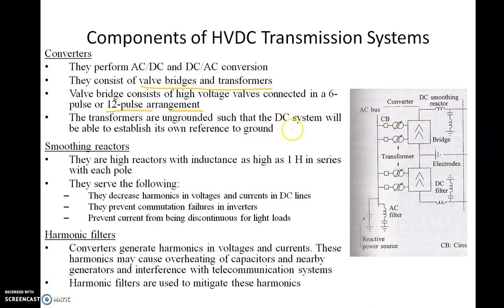Smoothing reactors are high-value reactors with very large inductance — it may be as large as 1 Henry in series with each pole, meaning each converter output. They decrease harmonics in voltages and currents in DC lines.